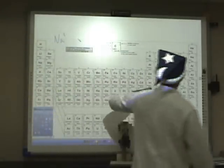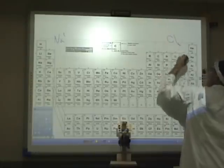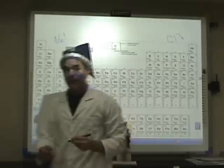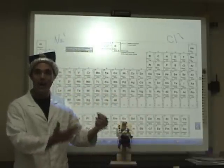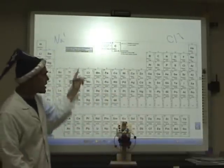And if we go over to here, we have chlorine. Chlorine has seven valence electrons. And if you add one and seven, you get eight, which means that as a compound, it's quite stable. So that's how that ends up working.